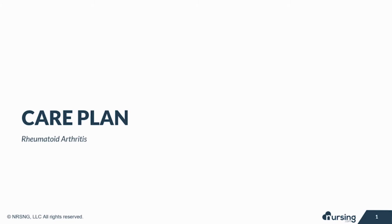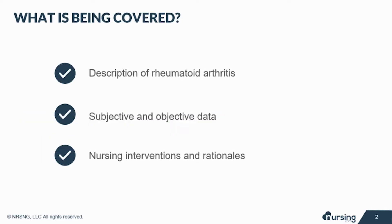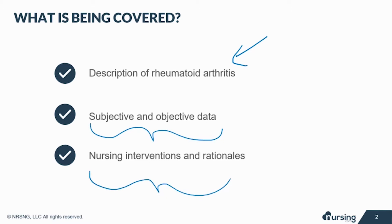Hey guys, let's take a look at the care plan for rheumatoid arthritis, also known as RA. In this lesson, we'll briefly take a look at the pathophysiology and etiology of RA. We're also going to look at additional things like subjective and objective data included in the care plan, as well as nursing interventions and rationales.